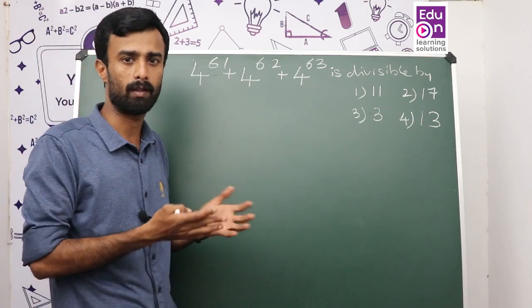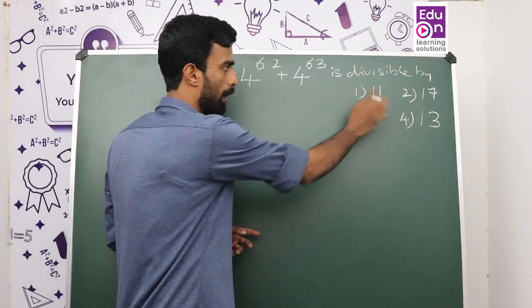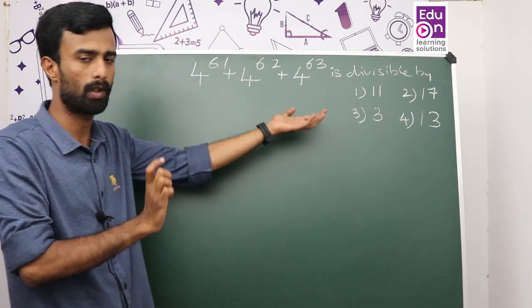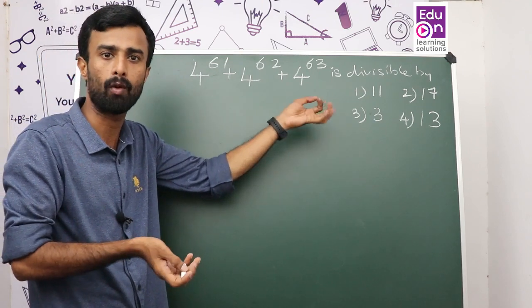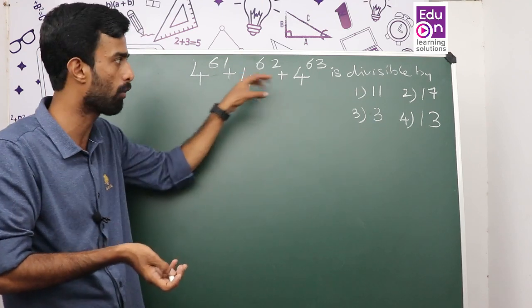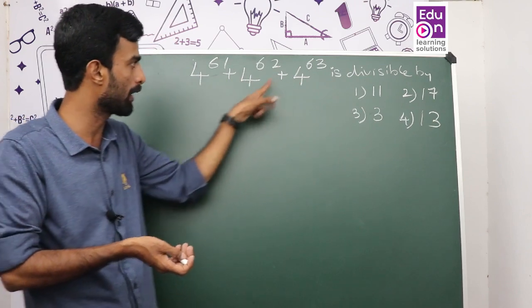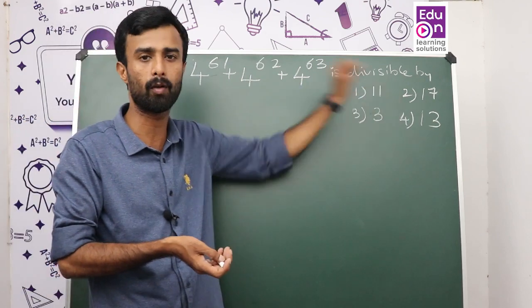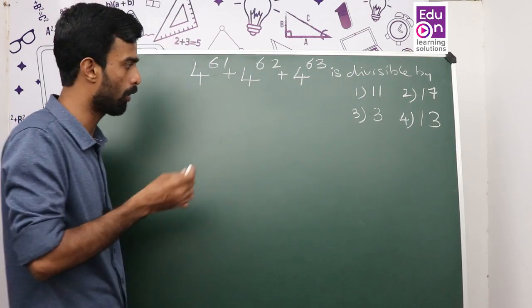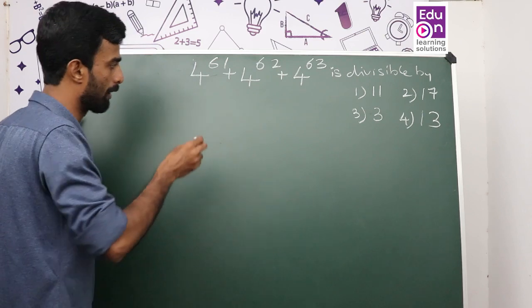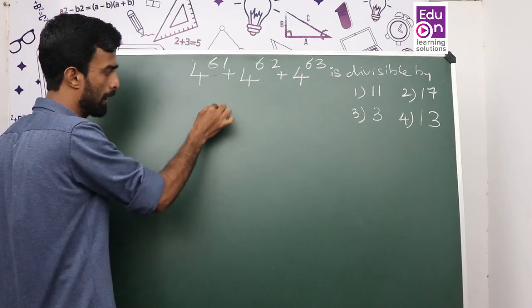If you are looking at Option 4, we will find the answer. We take 4 raised to 61 as a common factor and simplify the expression.